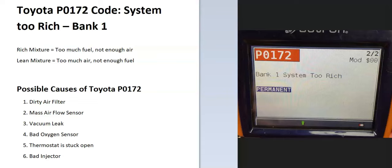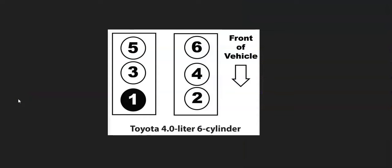There are a few possible causes of a Toyota P0172 code: it could be a dirty air filter, a bad mass airflow sensor, a vacuum leak, a bad oxygen sensor, a thermostat stuck open in some cases, or possibly a bad fuel injector. I'll go over each one and show you how to troubleshoot it.